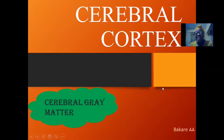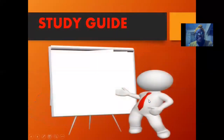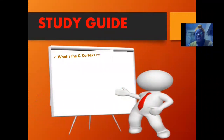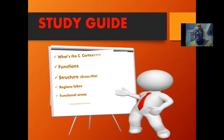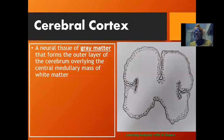Welcome. Let's look at the cerebral cortex. This is our study guide, and hopefully by the end of this class we should be able to describe what the cerebral cortex is, its functions, its structure in terms of growth and histology, the regions and the lobes of the cerebral cortex, functional areas, and the clinical and applied anatomy. The cerebral cortex is a gray matter outer layer of the cerebral hemisphere.